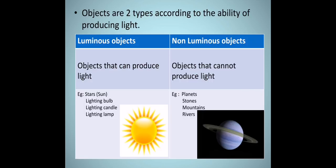Objects are two types according to the ability of producing light: luminous objects and non-luminous objects. Luminous objects produce light. Stars, light bulbs, candles, and lamps are examples of luminous objects. Non-luminous objects cannot produce light. Planets, stones, mountains, rivers, and others are examples of non-luminous objects.